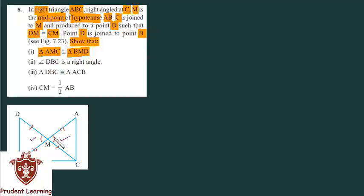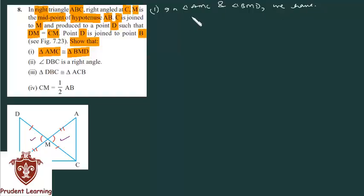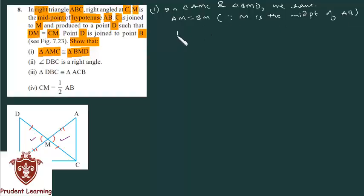This means you can prove both triangles congruent by the Side Angle Side congruence rule. In triangle AMC and triangle BMD, we have: AM is equal to BM, since M is the midpoint of AB. DM is equal to CM — it is given in the question itself.